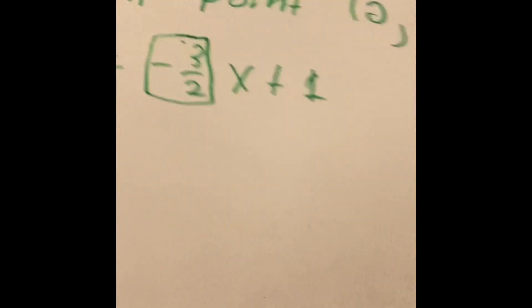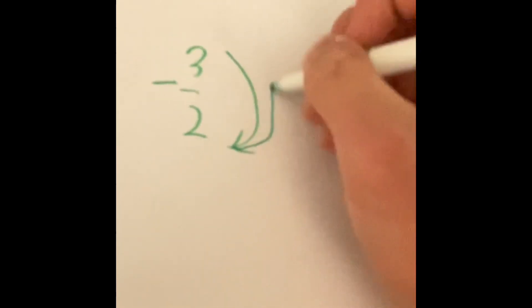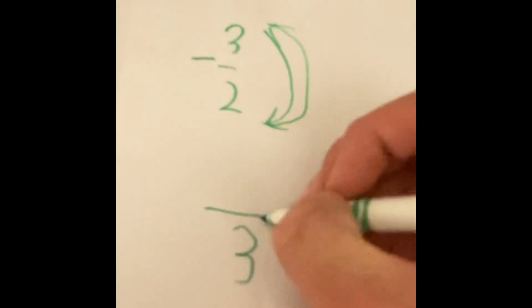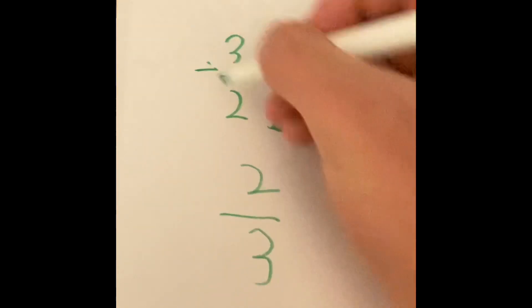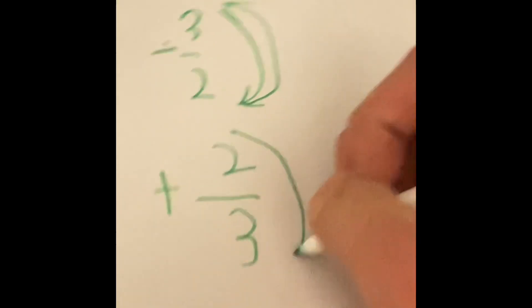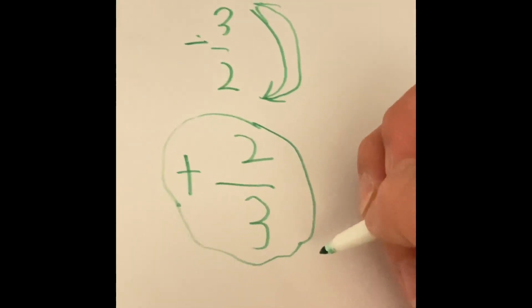Let's find the opposite reciprocal of negative 3 over 2. Since it's already a fraction, step one is complete. Then we flip-flop the numbers — 3 goes to the bottom and 2 goes to the top, giving us the reciprocal. And since it's a negative number, we turn it into a positive number. Positive 2 over 3 is our new slope.